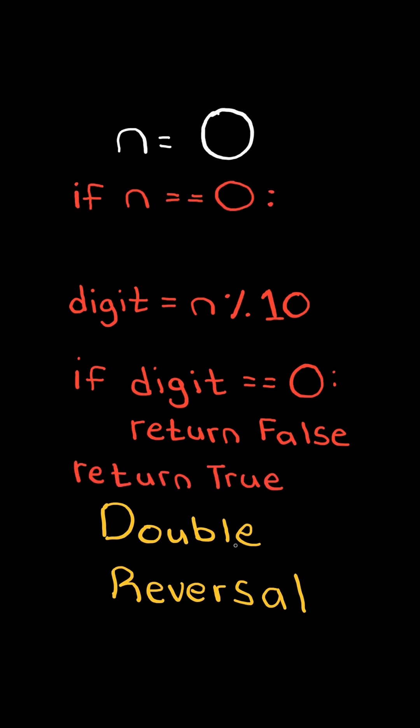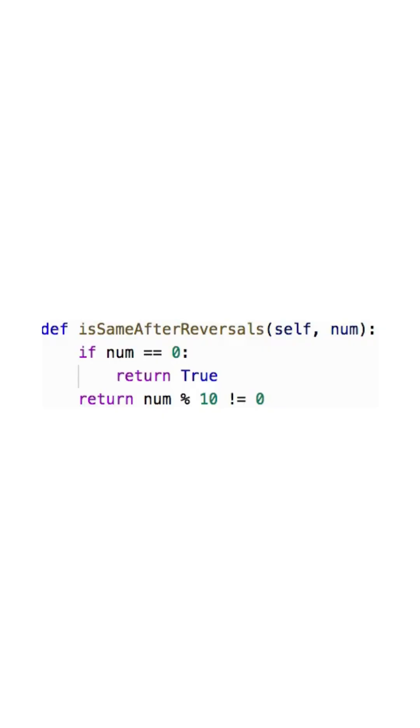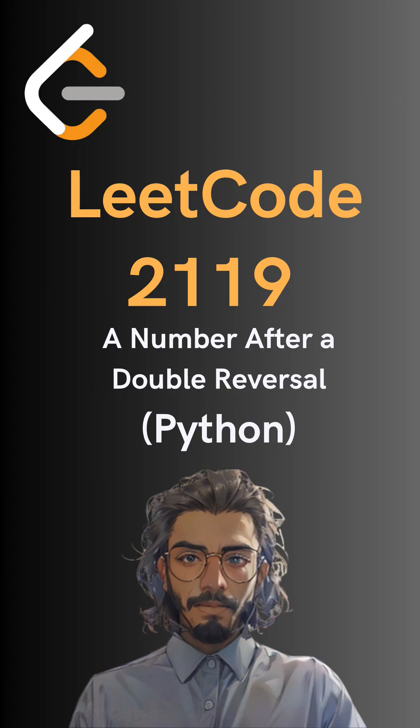A slight edge case is when n equals 0, in which case we return true. Here's the code to do so — please like and follow for more.